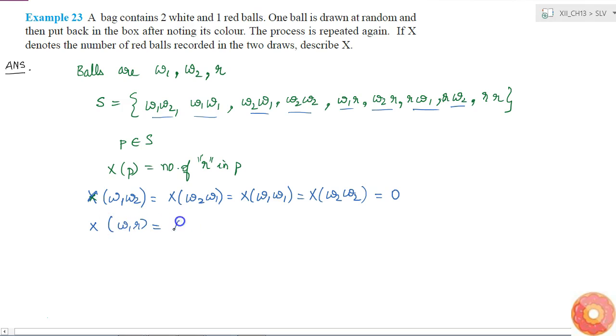w1 r is equal to X of w2 r, which is equal to X of r w1, which is equal to X of r w2. It will be one, correct? Because there is only one r.